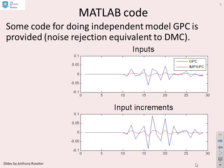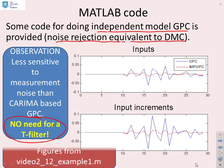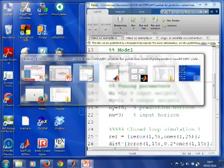If I do some MATLAB code then to compare independent model GPC with normal GPC, and you'll notice a comment here that independent model GPC gives equivalent noise rejection to DMC. And what do you notice? You can see that the noise rejection from independent model is much better. It's less sensitive to measurement noise than Karima-based GPC. So in other words, when you have an independent model, you might say, well, I don't need a T-filter because I've got good noise rejection already. Let's go to MATLAB and see some of this code in case you want to look at it yourself.